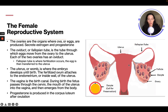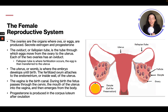The egg is then transferred to the uterus, which is the womb, and it's where the embryo will develop until birth. It will attach to the endometrium, or the inside wall of the uterus. Once that fertilized egg comes down, it will attach to the wall and then it will grow. The vagina is the birth canal. You have your cervix, and then you have your vagina.